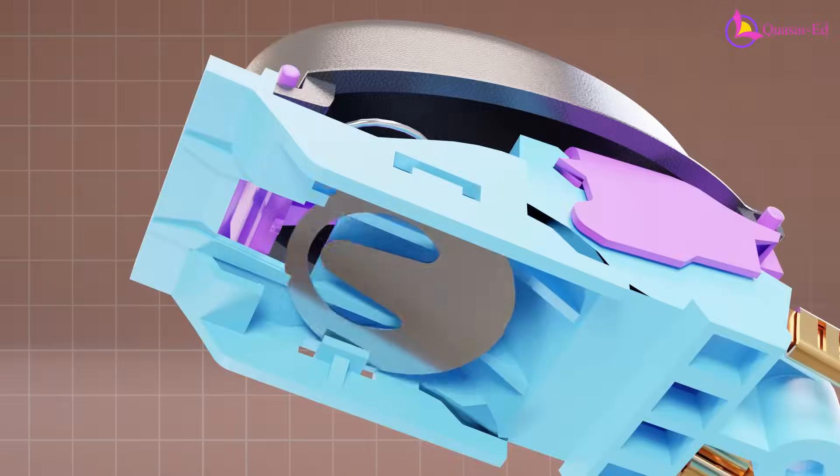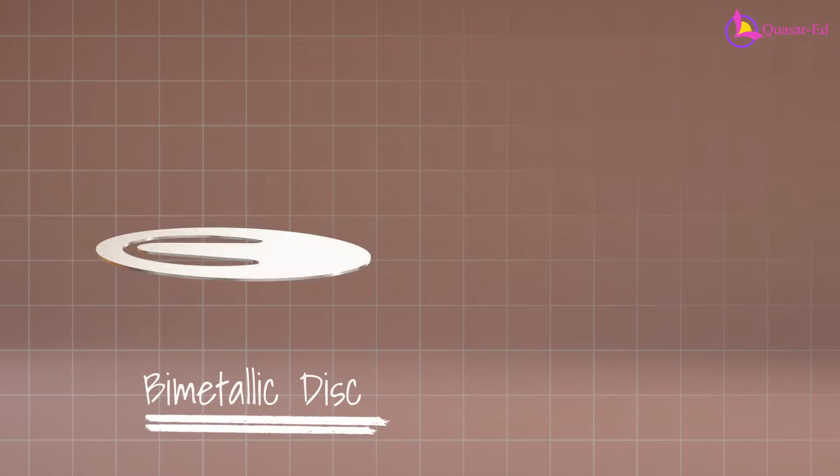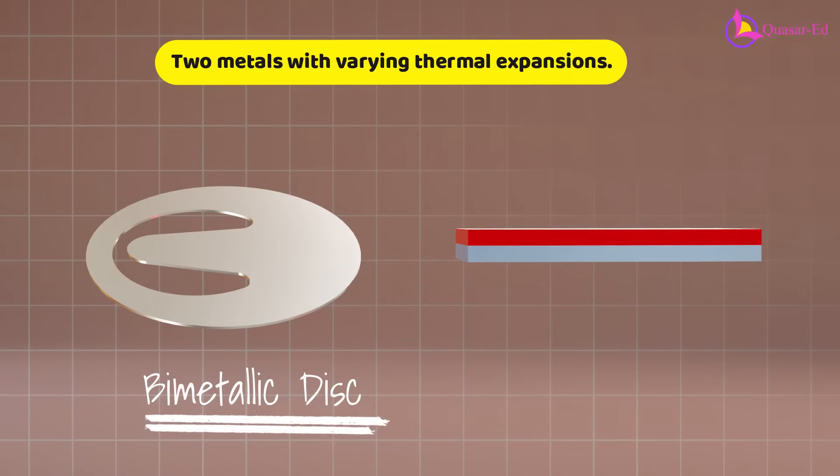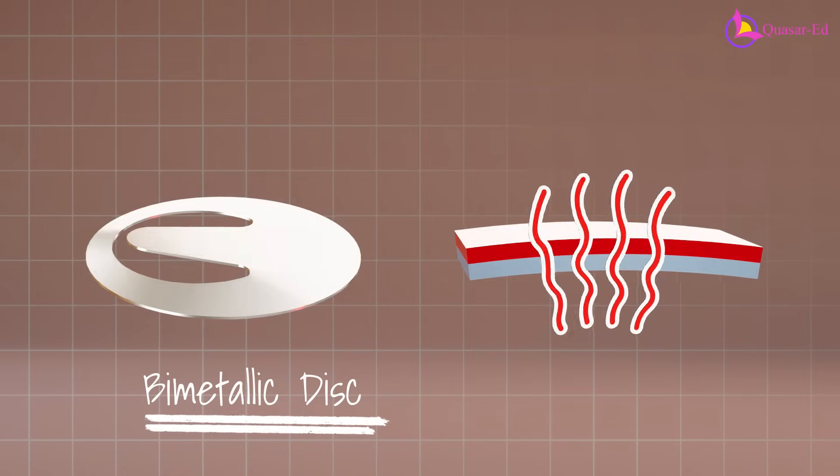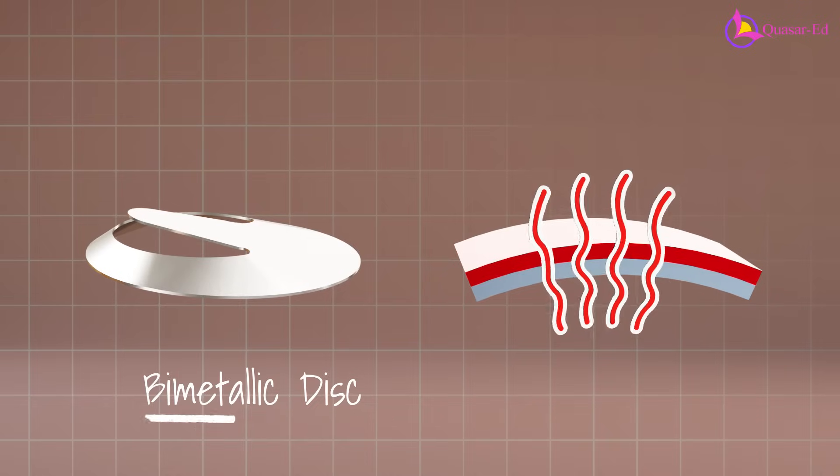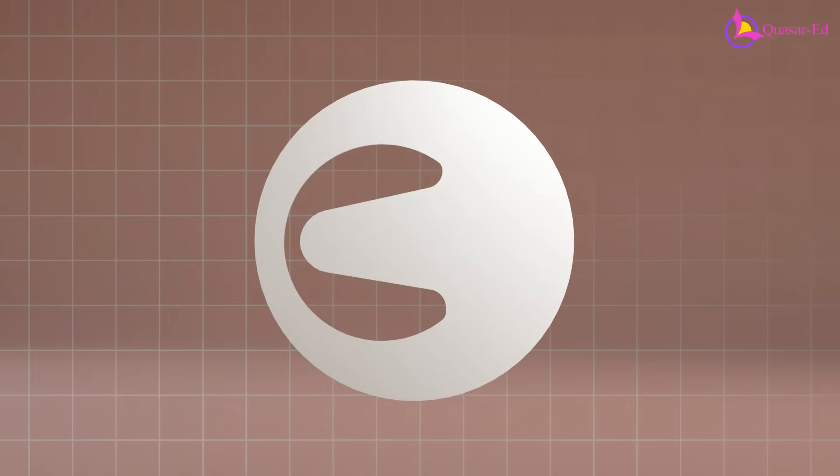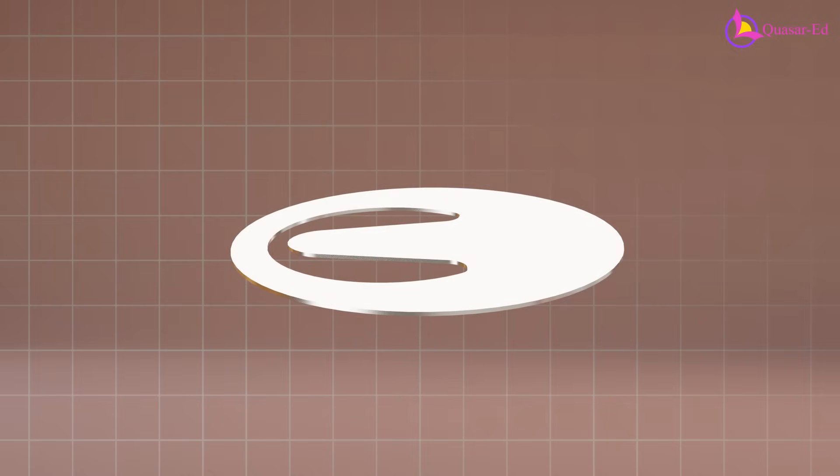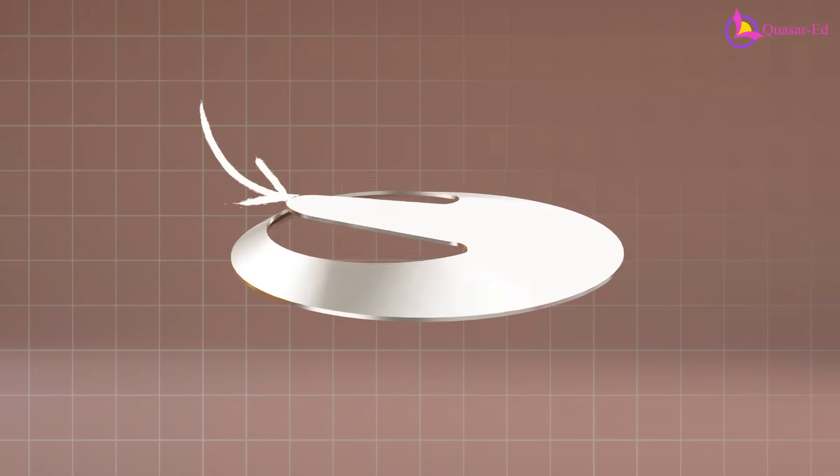Beneath the switch is a small bimetallic disc made of two different metals with varying thermal expansions. When heated, one metal expands more than the other, causing the disc to bend. Due to its unique shape, when the disc bends, it also raises the tongue in the middle.